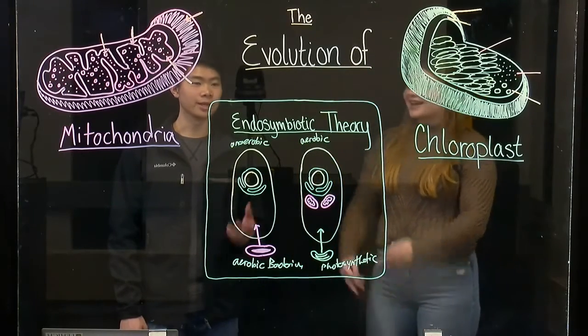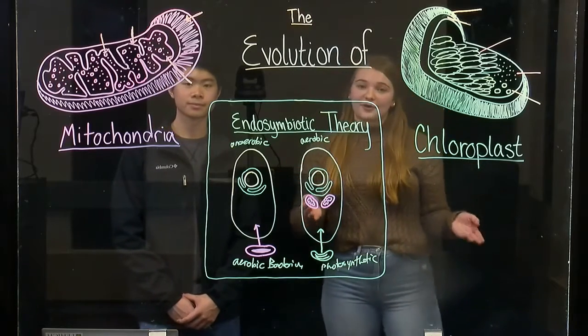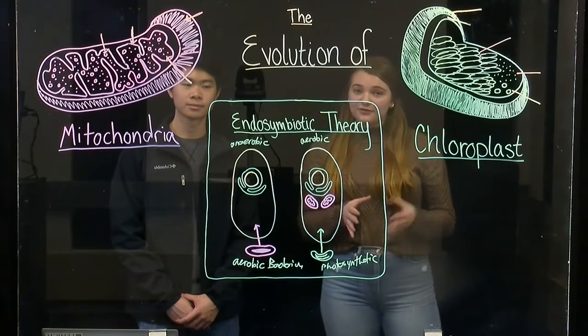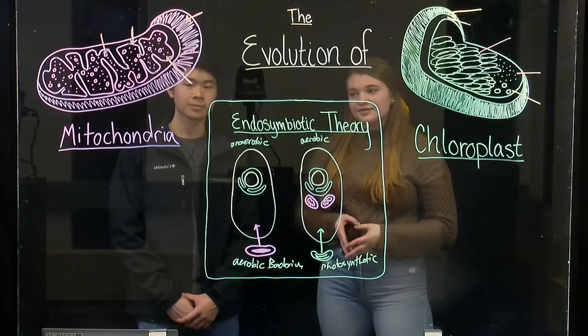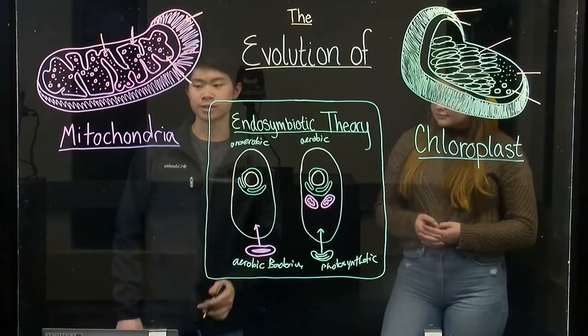This can be explained by the endosymbiotic theory, which states that both the mitochondria and chloroplast likely evolved from engulfed prokaryotes that once lived as independent organisms. So let's take a closer look at each individual organelle as a standalone.